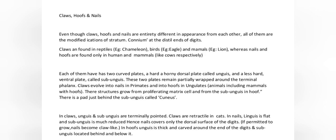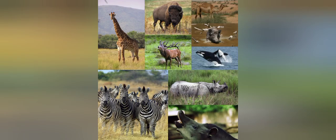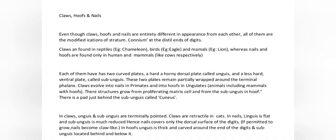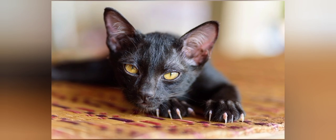Each of them has two curved plates: a harder horny dorsal plate called unguis, and a less hard ventral plate called subunguis. These two plates remain partially wrapped around the terminal phalanx. Claws evolve into nails in primates and into hooves in ungulates — animals including mammals with hooves. Their structures grow from proliferating matrix cells and from the subunguis in hoof. There is a pad just behind the subunguis called cuneus. In claws, unguis and subunguis are terminally pointed. Claws are retractile in cats.